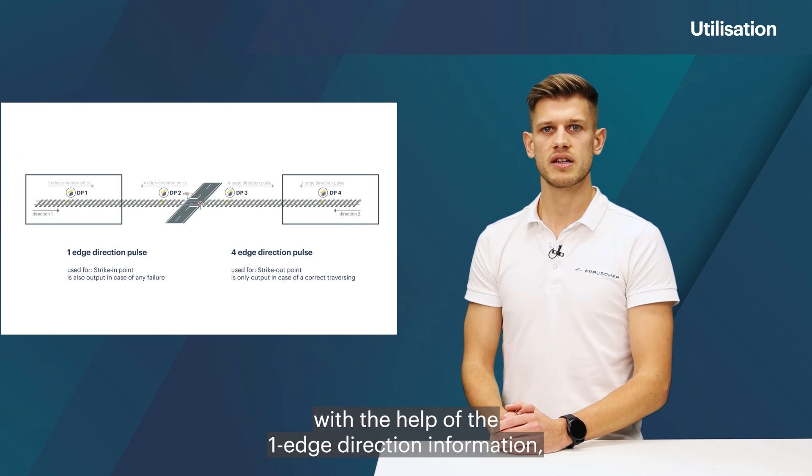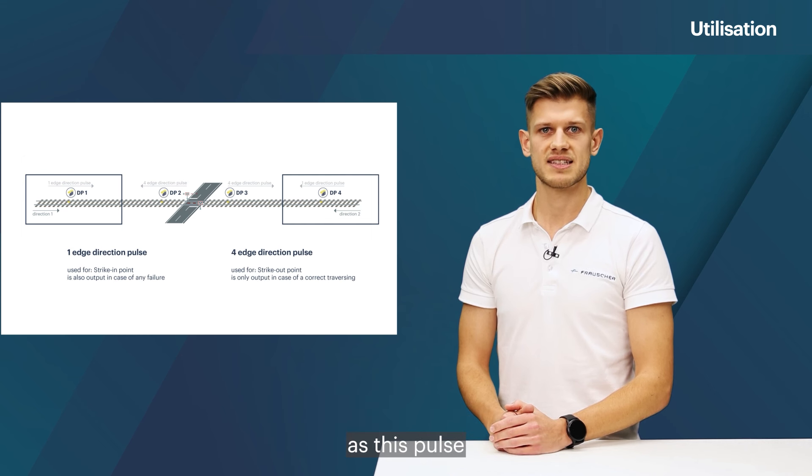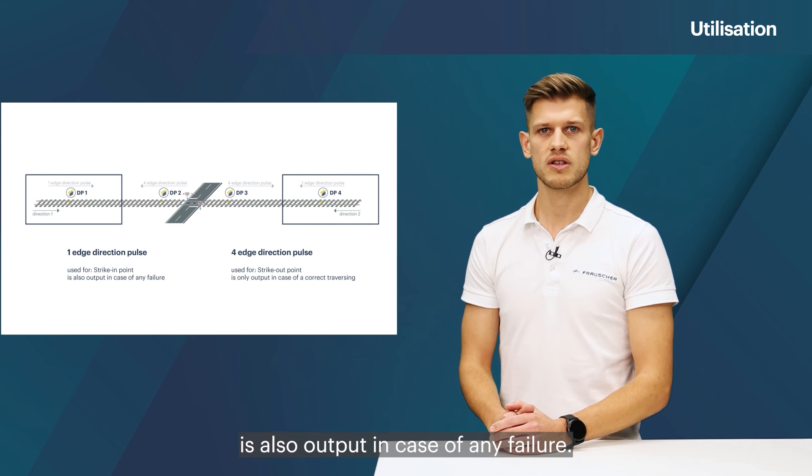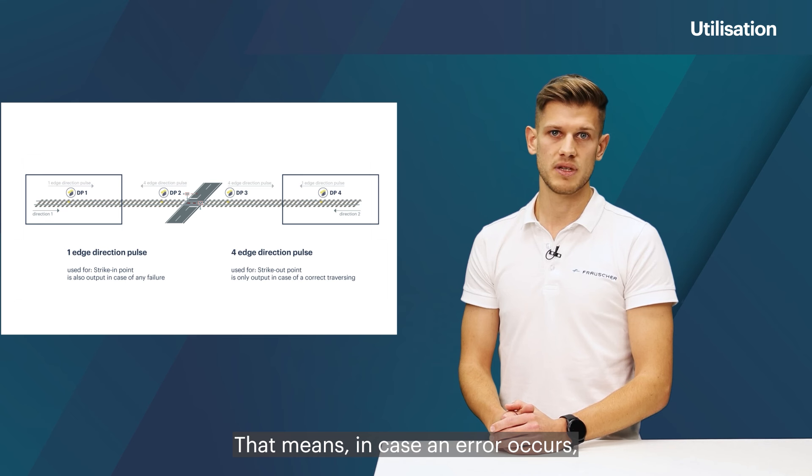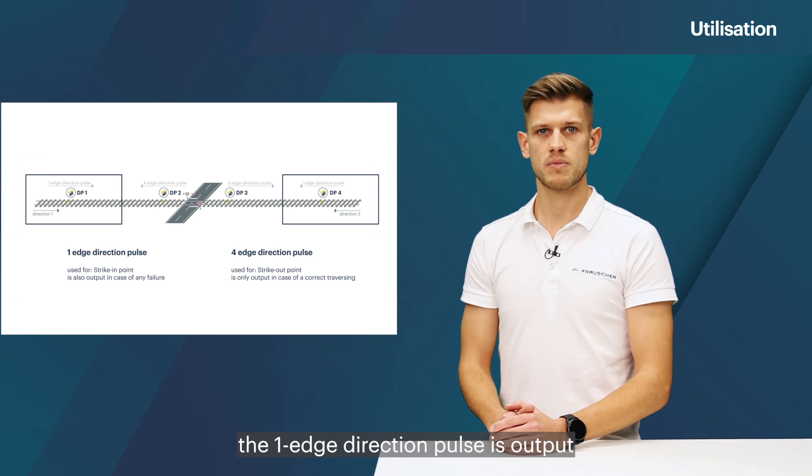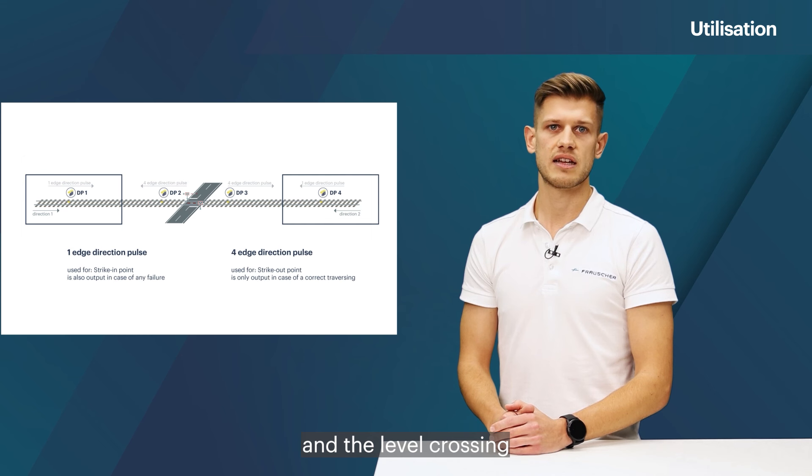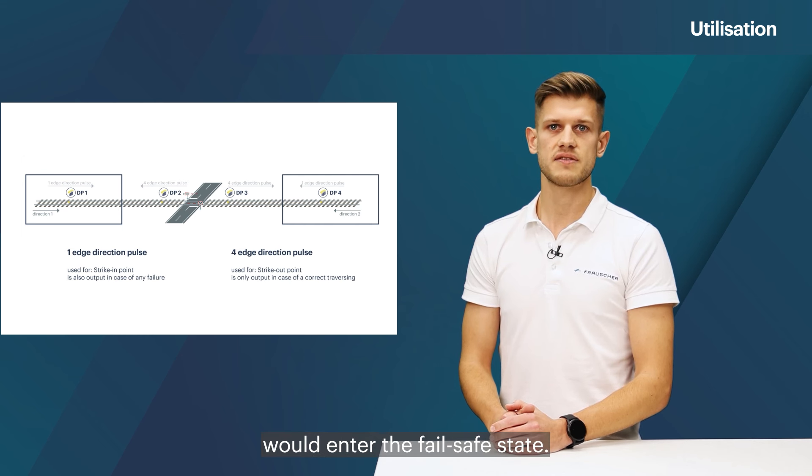This must be done with the help of the one-edge direction information as this pulse is also output in case of any failure. That means, in case an error occurs, the one-edge direction pulse is output and the level crossing would enter the fail-safe state.